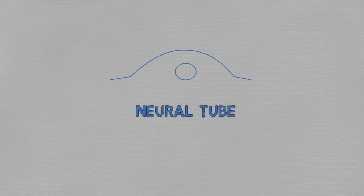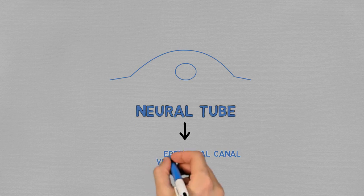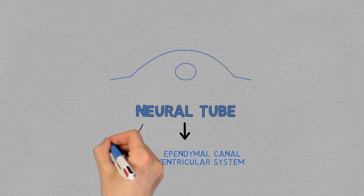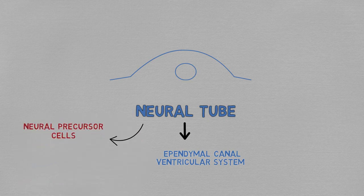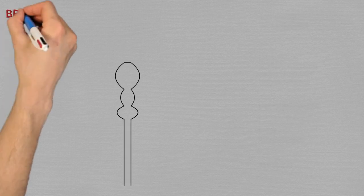The neural tube will give rise to the central canal of the spinal cord, the ependymal canal, and to the ventricular system of the brain. Every neuron in the central nervous system is born of the cells that line the neural tube, and it is the expansion of the tube on the cephalic pole of the embryo that turns into the brain. Basically, what happens is the neural tube dilates, forming these balloons that are called brain vesicles.